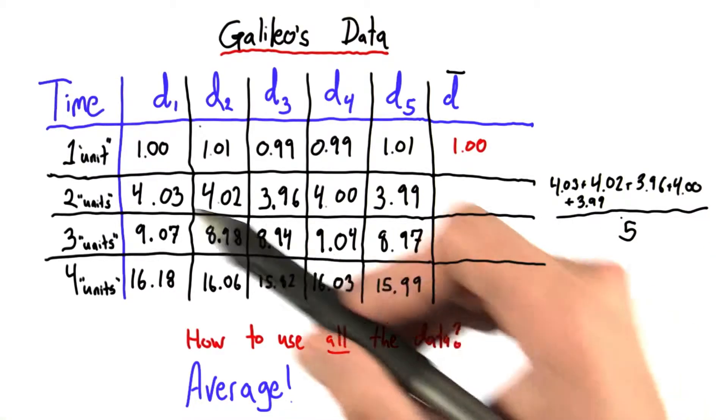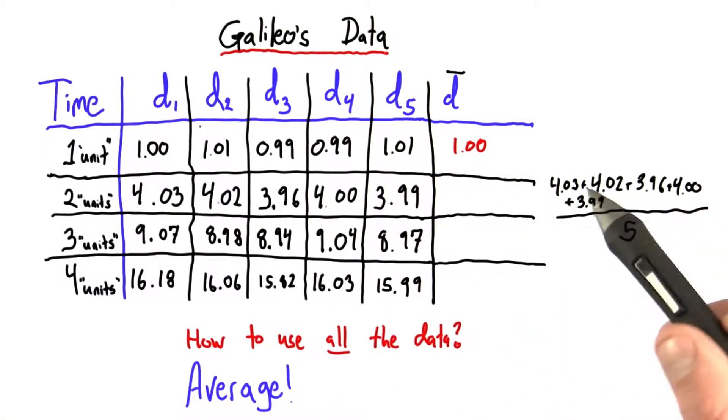To calculate these answers, I added up all of the entries in each row. So for example, in this row, I added up these numbers, divided by 5